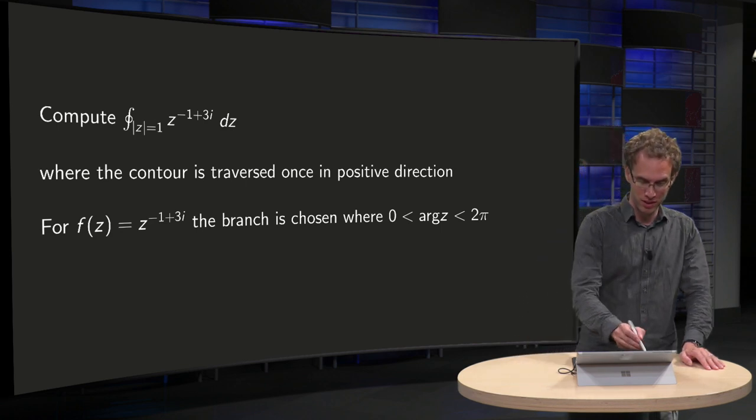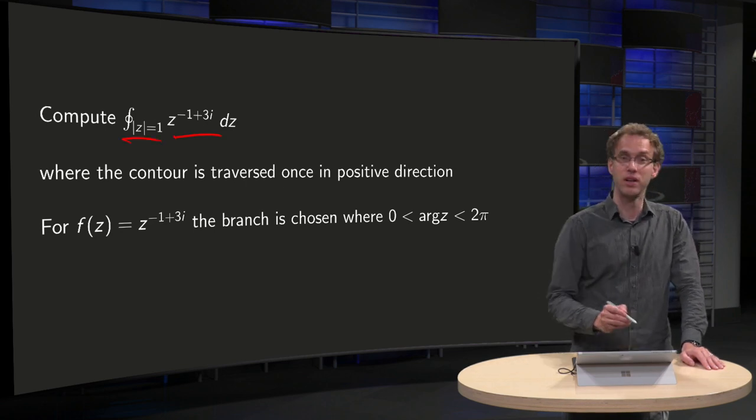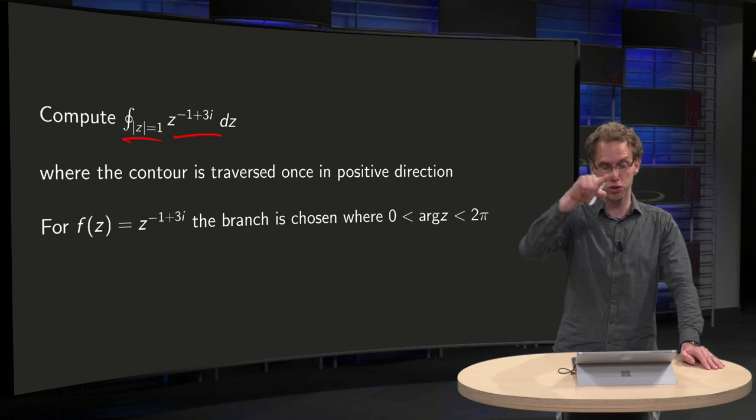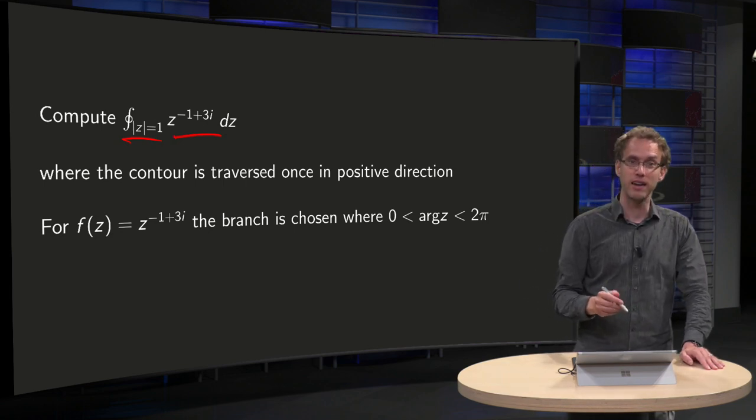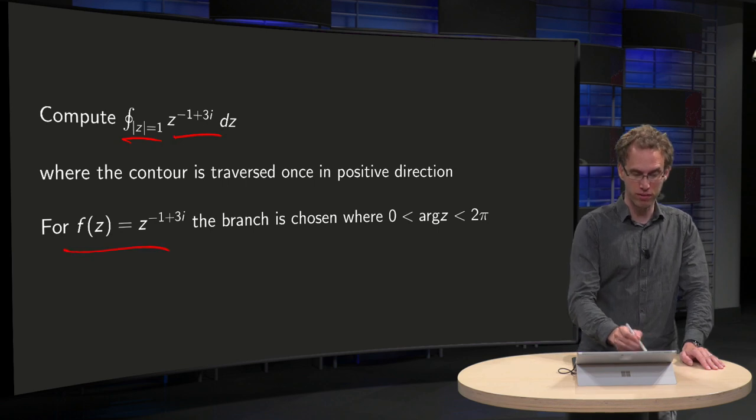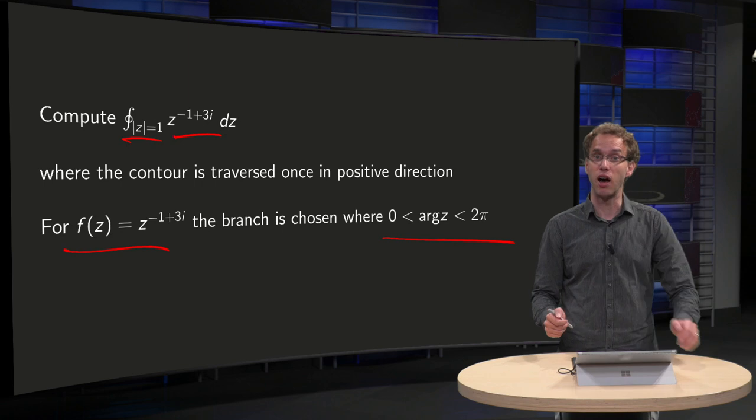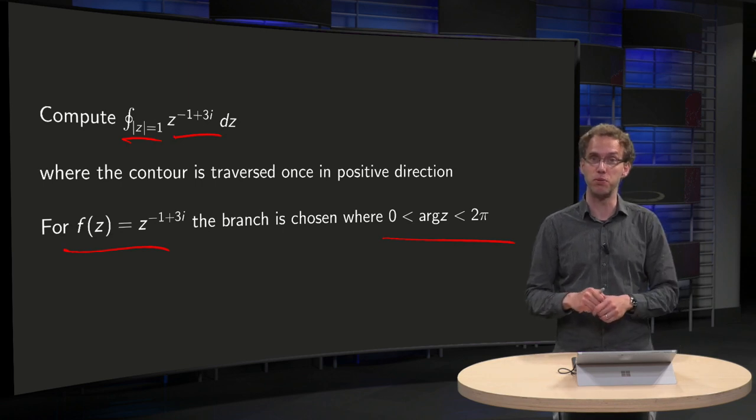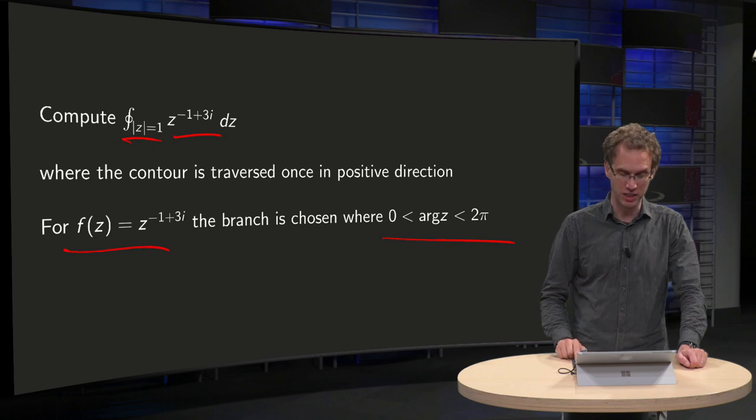So you have the function z to the power of minus 1 plus 3i, contour |z| equals 1, so the unit circle, traversed in positive direction. Then some more information is given that your f(z) is such that the branch is chosen such that the argument of z is between 0 and 2π, so the branch cut is along the positive real axis in this case.